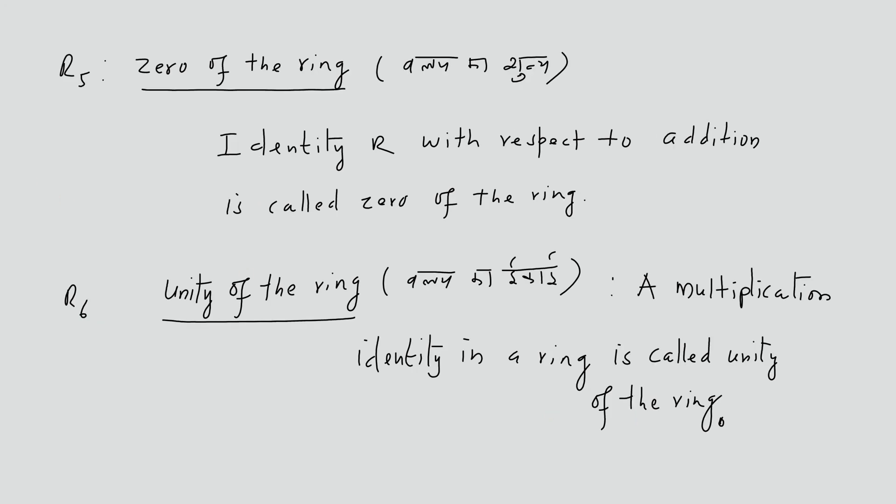R5: Zero of the Ring. The identity with respect to addition is called the zero of the ring, since (R, +) is an abelian group.